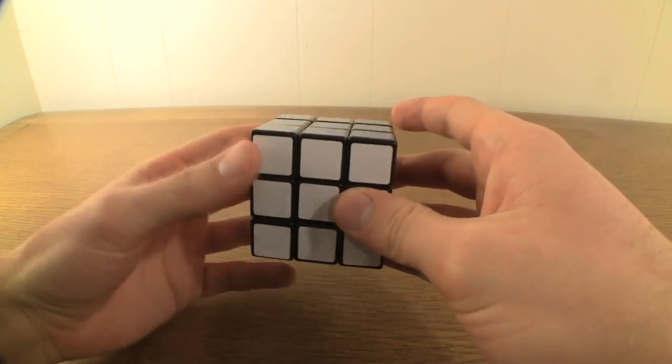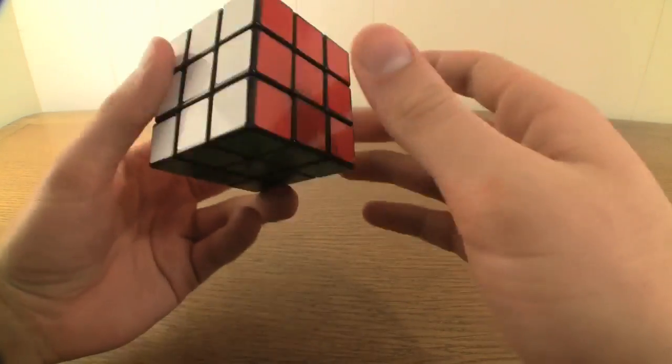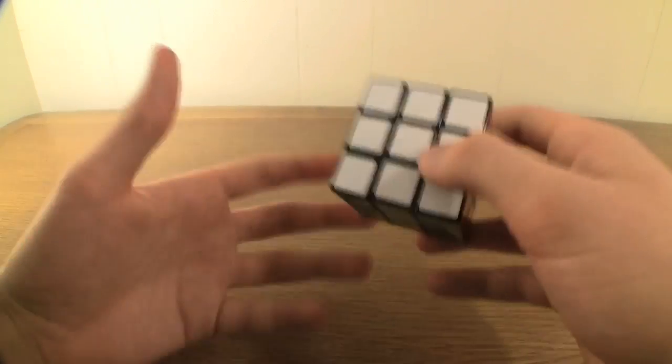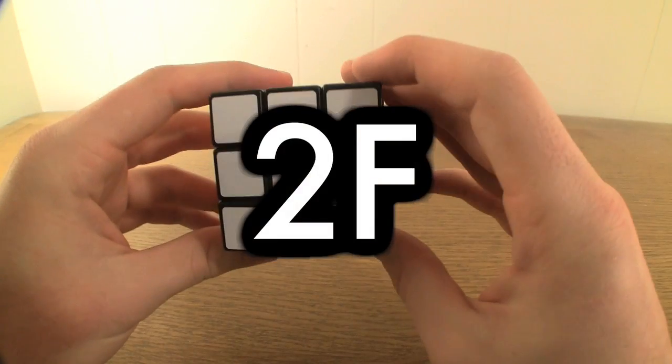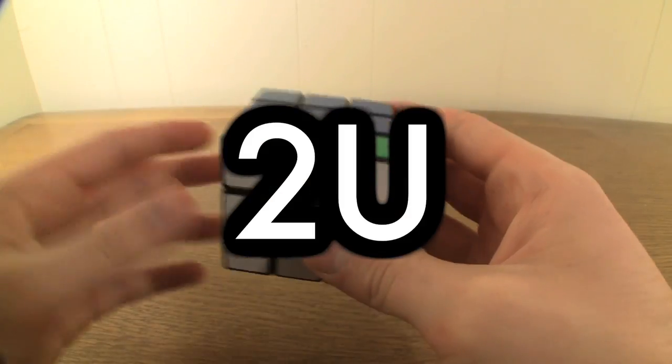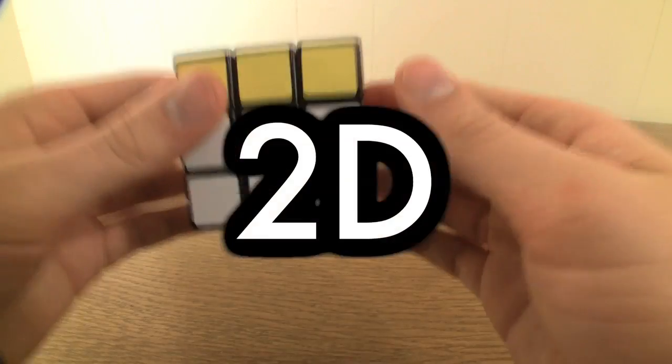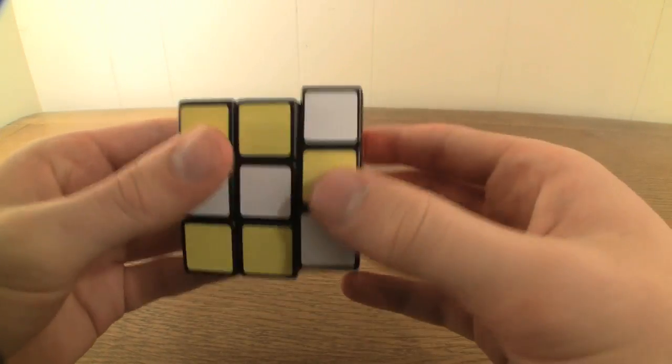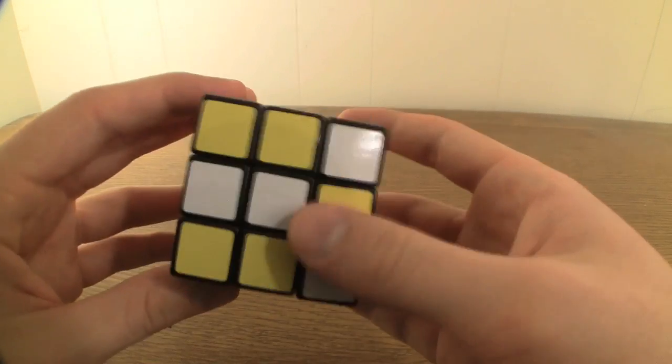Finally, a capital letter preceded by the number 2 represents a 180 degree turn of the wedge represented by the letter. Because it is a 180 degree turn, it doesn't matter whether we go clockwise or counterclockwise. A 2F would look like this. A 2U would look like this. A 2D would look like this. A 2R would look like this. And a 2L would look like this.